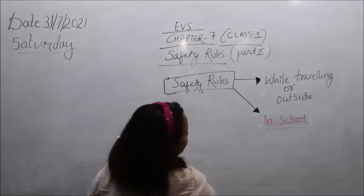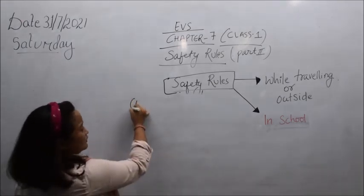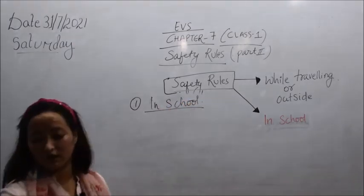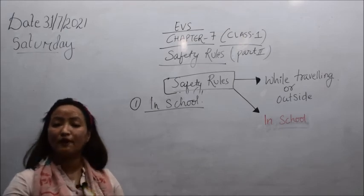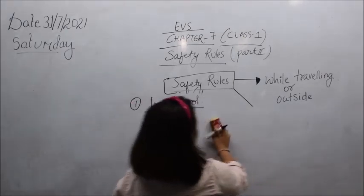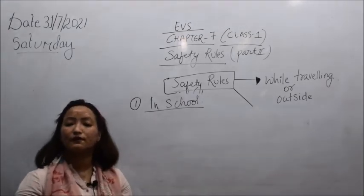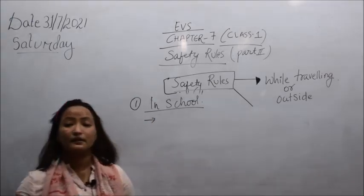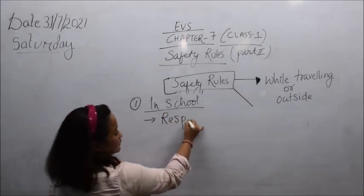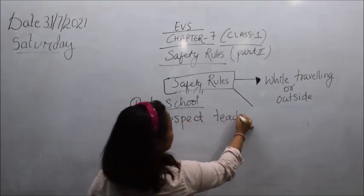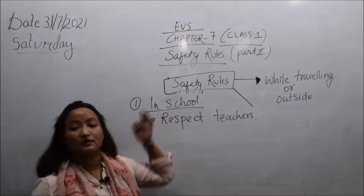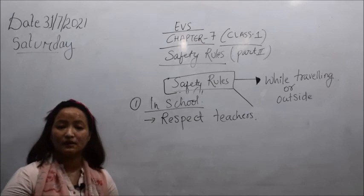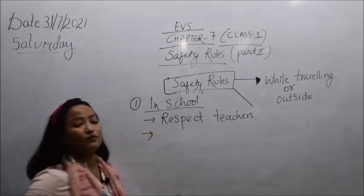The next category is safety rules for school. When it comes to school, there are some rules you have to follow. You have to be disciplined and follow the rules and regulations of the school authority. The first rule: respect teachers. If you respect your teacher, the teacher will surely help you in the future.